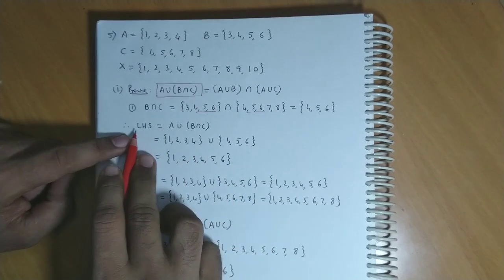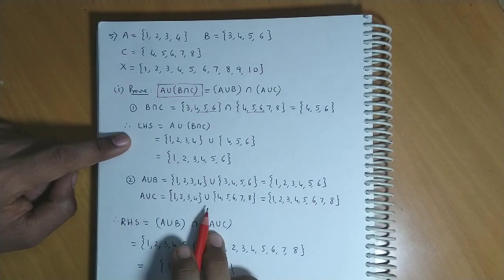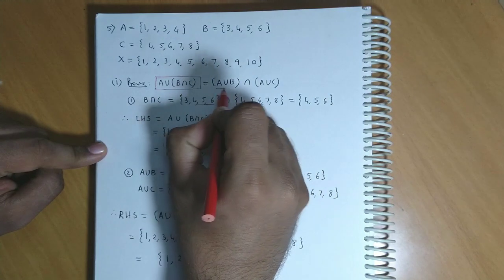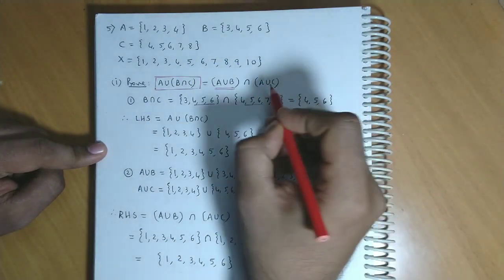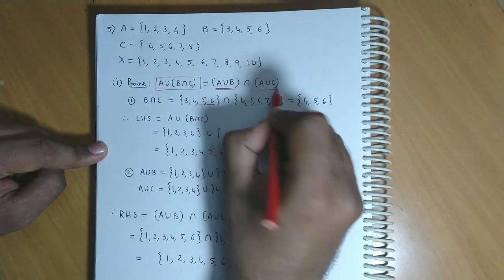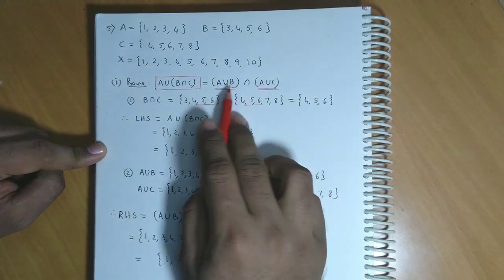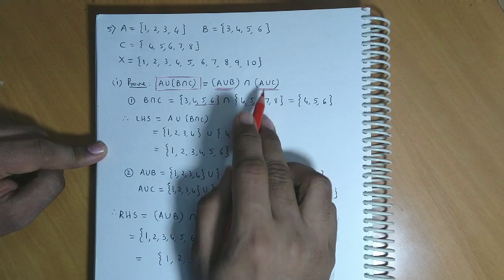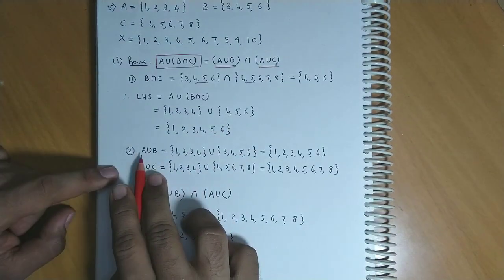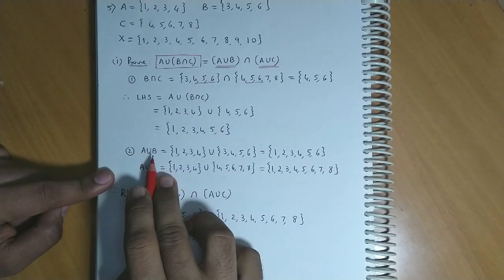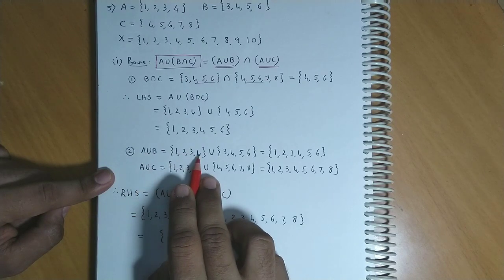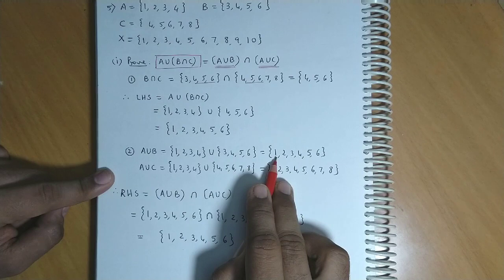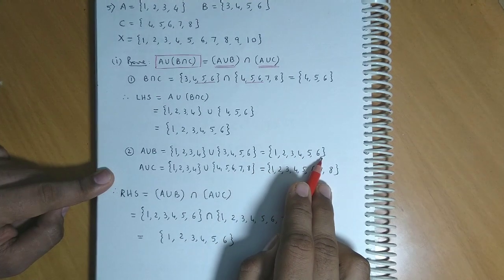Toh yeh hamara left hand side hai. Now for the right hand side, hameh doonoh terms lene hai: pahla A union B, aur ek aur set chahiye hameh A union C. Toh pehle hum A union B obtain karte hai. Ab ismein union karenge {1, 2, 3, 4} and {3, 4, 5, 6}. Toh union mein aayega {1, 2, 3, 4, 5, 6}. Koi bhi element repeat nahi karna hai.